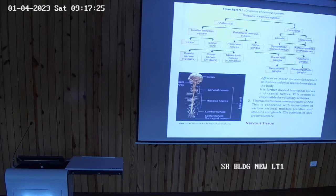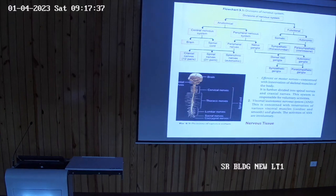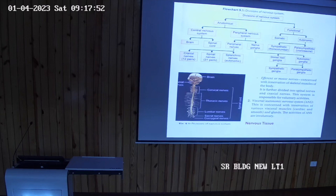Now see the further classification. The peripheral nervous system consists of peripheral nerves of different types: it can be cranial nerves — there are 12 pairs of cranial nerves — and spinal nerves, which are 31 pairs. Besides this, there are autonomic nerves or splanchnic nerves. All three are put under the head of peripheral nervous system.